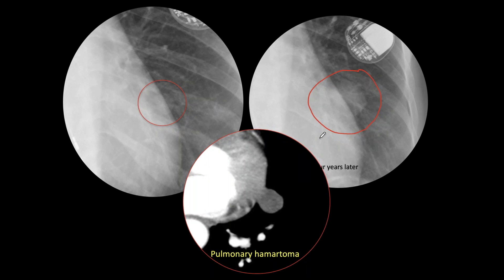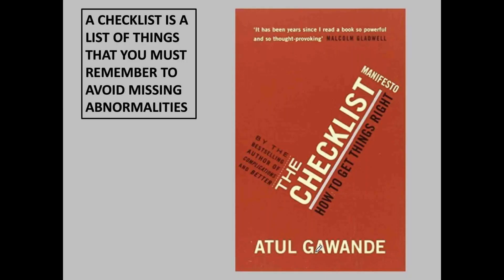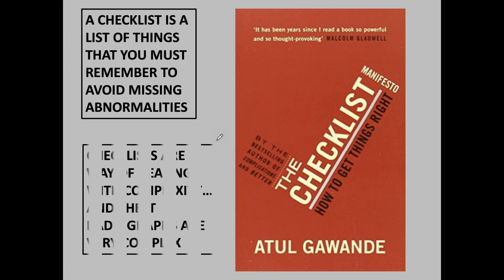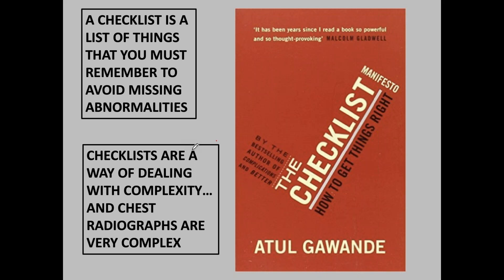The CT shows the nodule has low density, about minus 30 Hounsfield units. That is very good news for the patient but bad news for the radiologist who initially missed the initial nodule. How do we avoid making this type of mistake? We use a checklist — a list of things you must remember to avoid missing abnormalities. It is used in industry, by airplane pilots, and in medicine, as a way of dealing with complexity. Chest radiographs are very complex, so to avoid missing visible things, we have to use checklists.